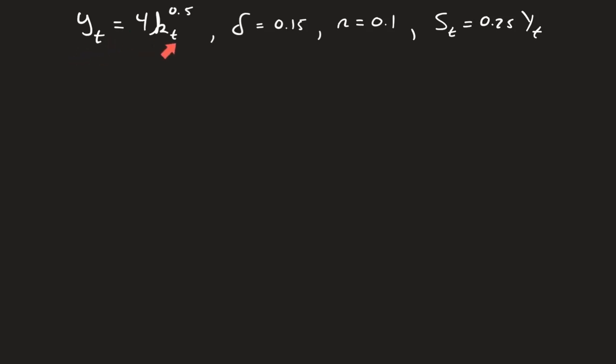y sub t is equal to 4 times k sub t raised to the 0.5, a depreciation rate of 15%, a population growth rate of 10%, and an overall savings equal to 0.25 times y_t. That really gives us what we want to look for, which gives us our savings rate, so lowercase s equals 0.25.